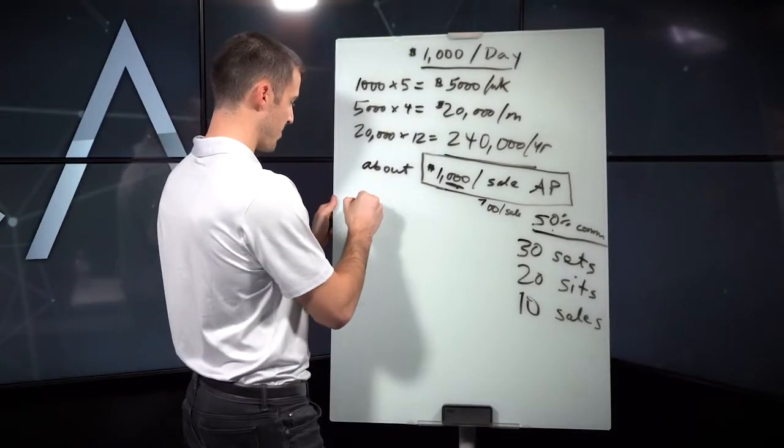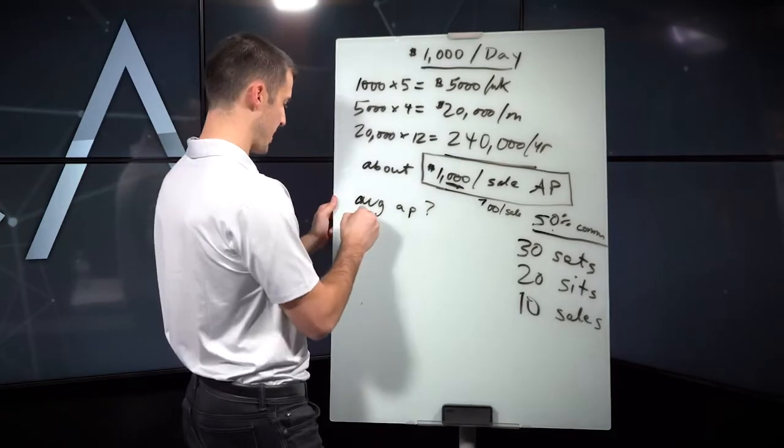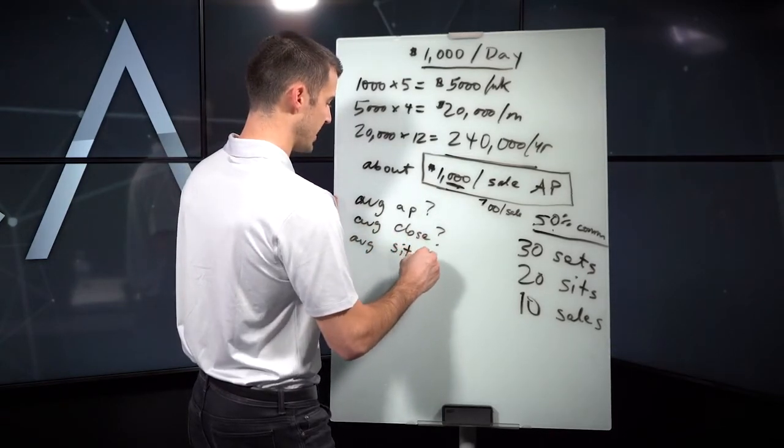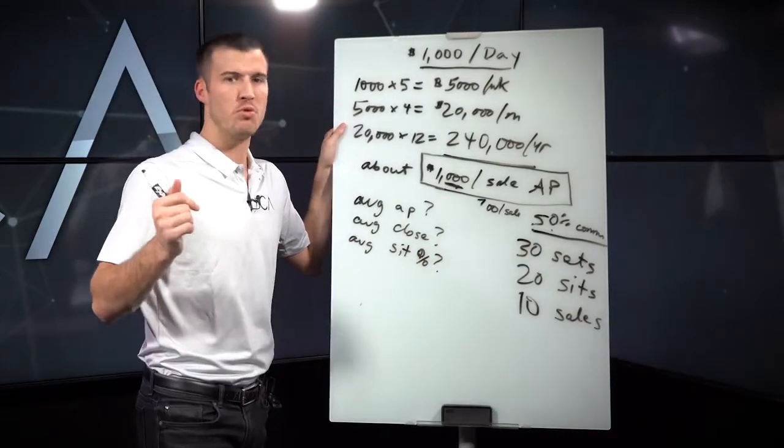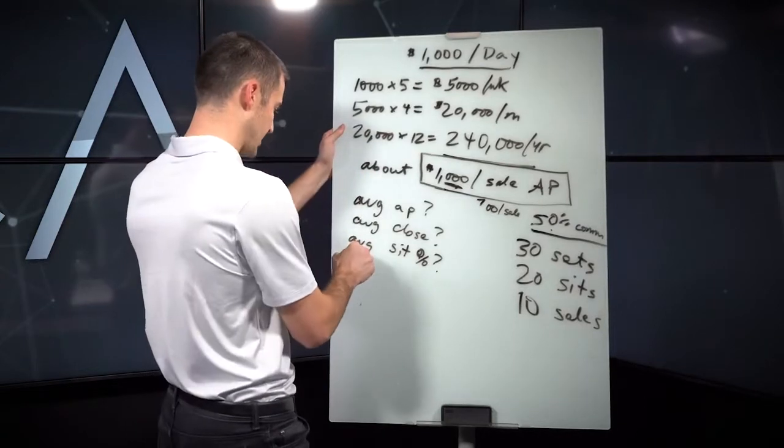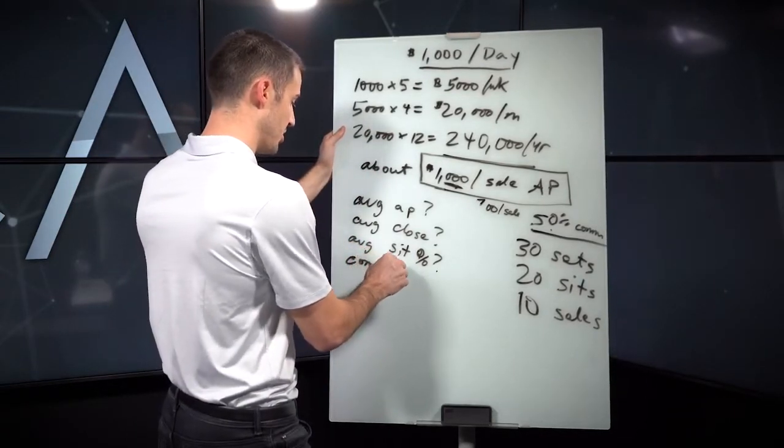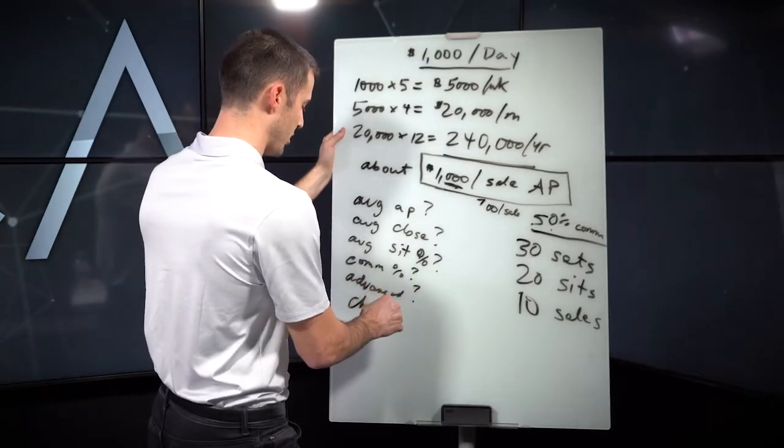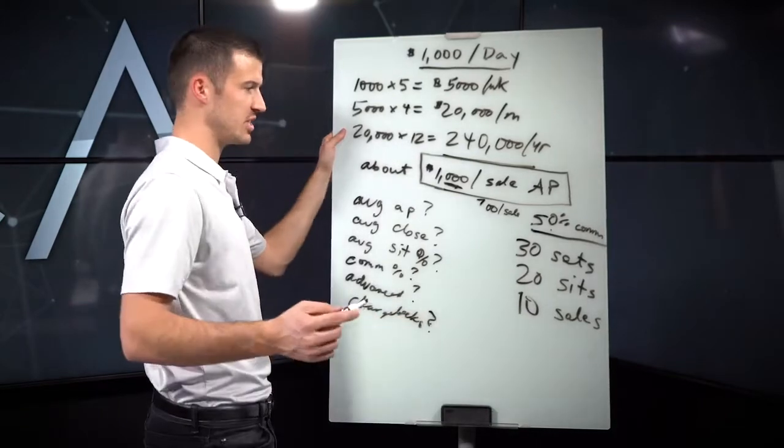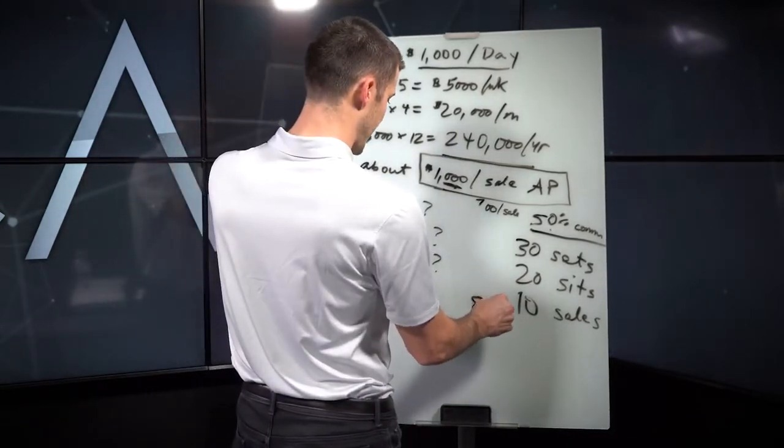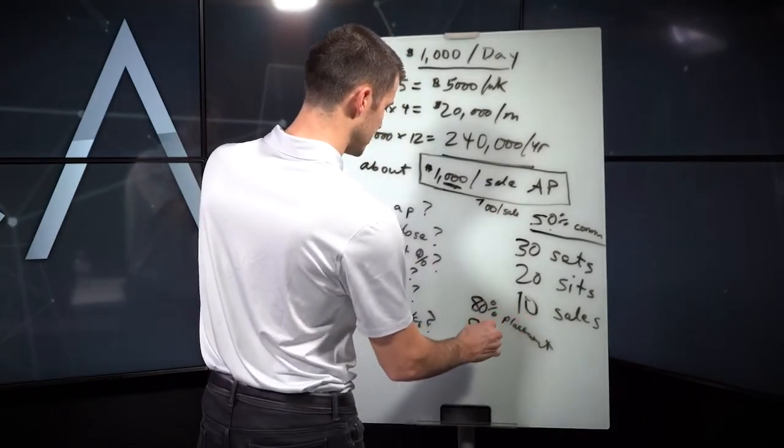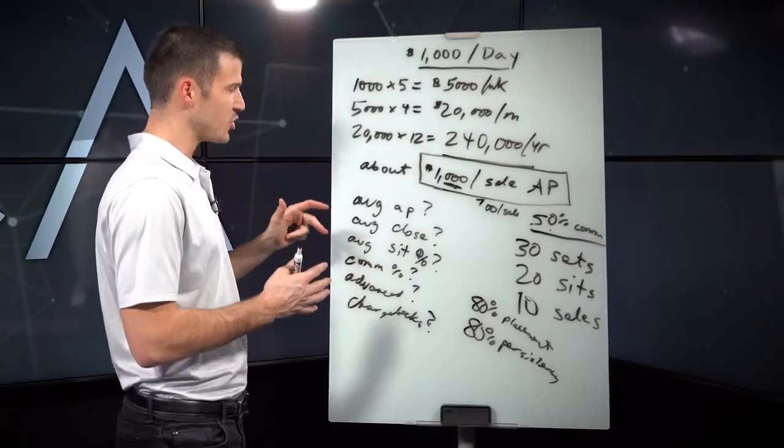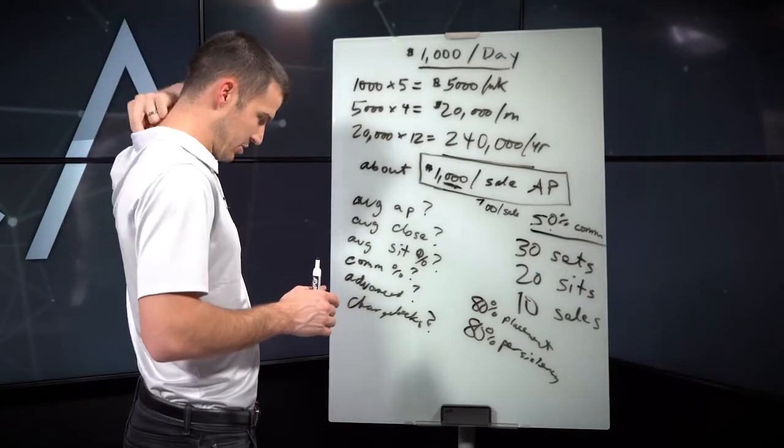In that case, if you're on a 50% commission level, you would need 30 sets, 20 sits, 50% close rate, 10 sales. So this is about what I would have had to do back in the day to do about a quarter mil of premium. That's where you've got to really start to think about the things you have to think through in your mind are: What is my average AP? What is my average closing rate? What is my average sit rate? What is my commission percentage? What am I advanced? Should I account for chargebacks? Should I account for persistency or placement?